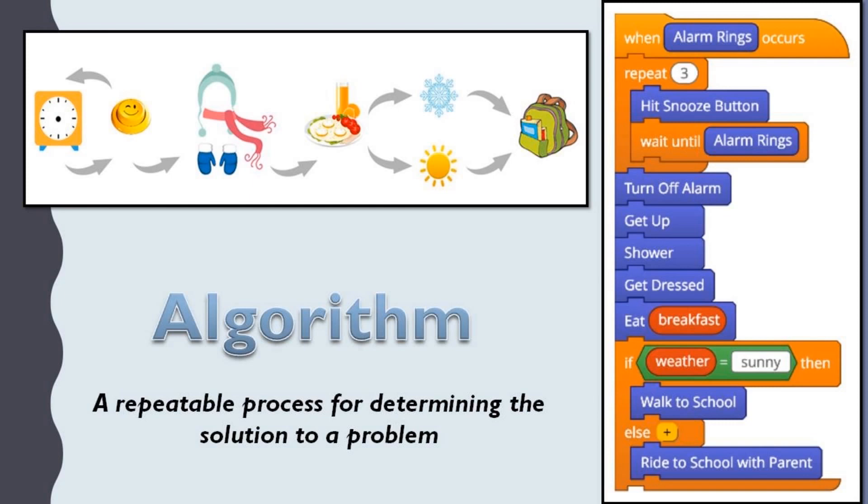As an example, a recipe for making food is an algorithm. The method you use to solve addition or long division problems is an algorithm. And the process of folding a shirt or tying the shoelace knot is an algorithm. Even your morning routine could be considered as an algorithm.